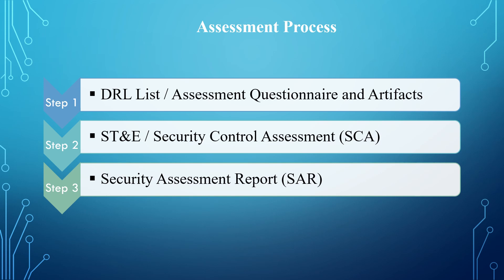The third step is the security assessment report, which shows the security posture of an application or system. It shows the total number of controls assessed, the number of controls that are satisfied and other than satisfied. It also shows the POAM, which documents controls with vulnerabilities and findings and provides possible recommendations — milestones — to remediate those controls. It also contains the vulnerability scan reports for that particular application or system.